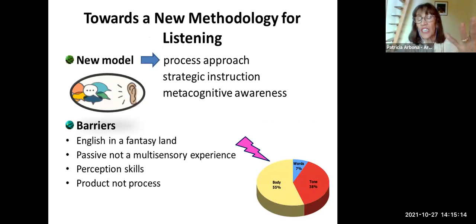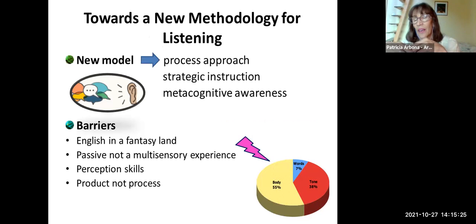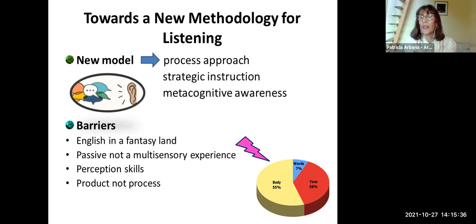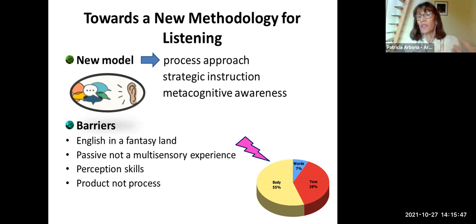Why do we need a new methodology? This new model focuses on a process approach, not on the outcome. If we concentrate on the process, we need to give the students strategic instruction — they need strategies so they will be able to select which are important for the listening they are having at the moment. And of course, metacognitive awareness, because when they discover the type of strategies they have to use, they are able to select which are most appropriate for a specific conversation.